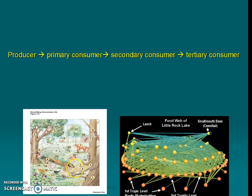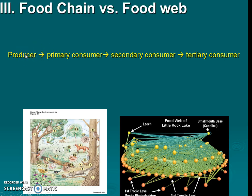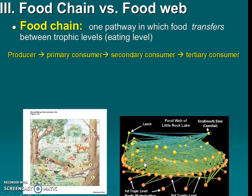Notice that the arrow points at the consumer's mouth. So a primary consumer is going to eat a producer, and we point the arrow in that direction. This is a food chain — it's only one thing eating another thing eating another thing. A food web is a lot more complex; it has a lot of food chains combined. A food chain has only one pathway, and we can see how matter is transferring between these different organisms.